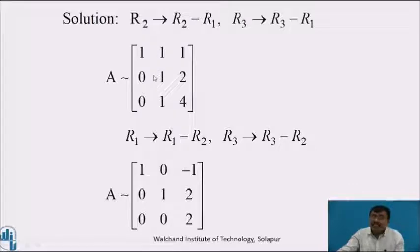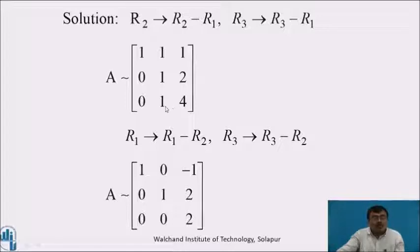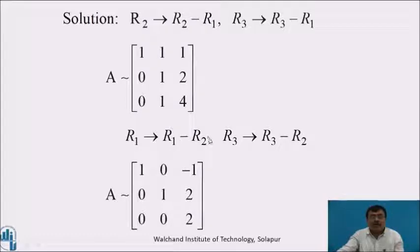Now in the second step, use the element 1 (which is not equal to 0) to make the second element of the first row and the second element of the third row equal to 0 by elementary row transformation. That is, R1 = R1 − R2, R3 = R3 − 2·R2. The matrix becomes [1, 0, −1; 0, 1, 2; 0, 0, 2].